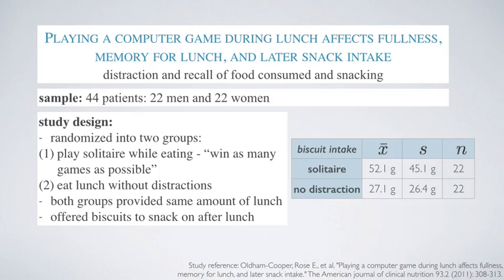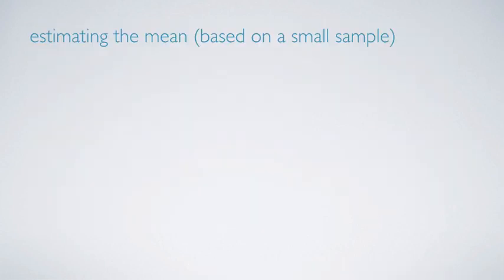The summary statistics show that the average biscuit consumption for the distracted group — those who played solitaire — was 52.1 grams, and for the no-distraction group the amount was 27.1 grams. We're also given standard deviations for both groups, and the sample sizes, which we know are both 22. For now we're going to focus on only one group and work on estimating the mean for that group.